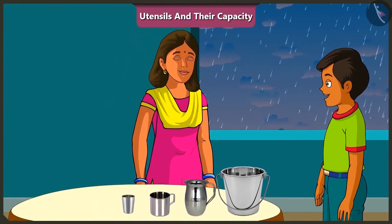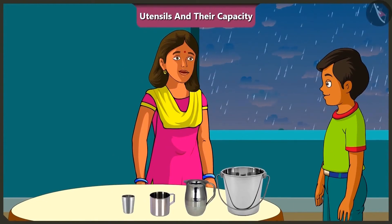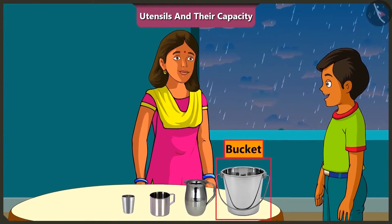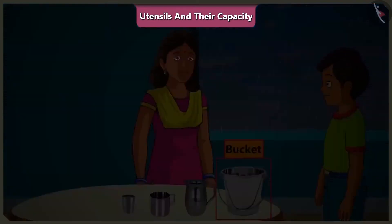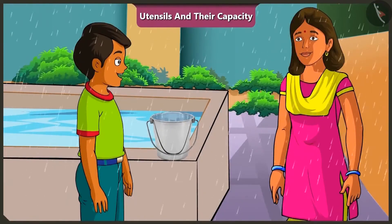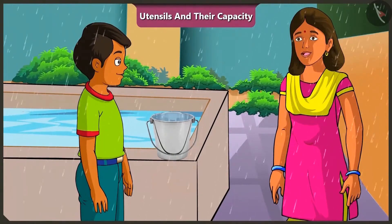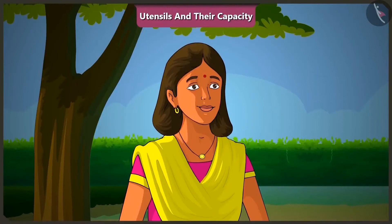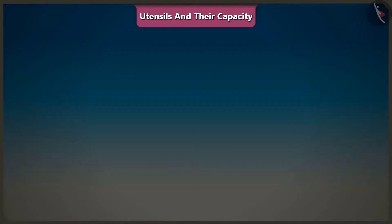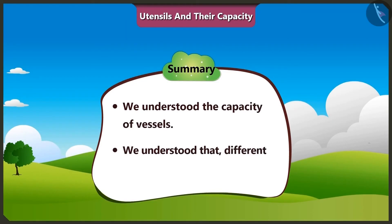Hey, Bummy. Look, it has started raining. Mishtu, just tell me, which vessel should we use to collect rainwater? We should collect it in this bucket, because the bucket has the highest capacity. And with the help of this bucket, it will be possible to fill the tank much faster. Well said. Children, today along with Mishtu, we understood the capacity of vessels and that different vessels have different capacities.